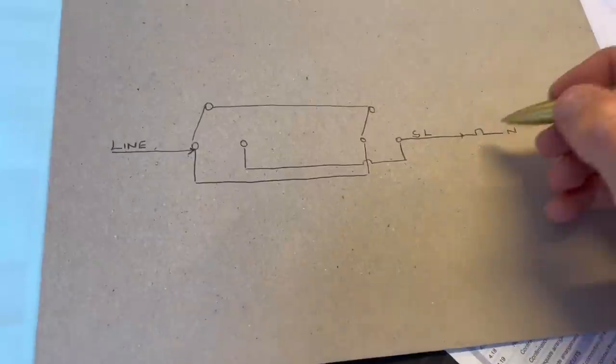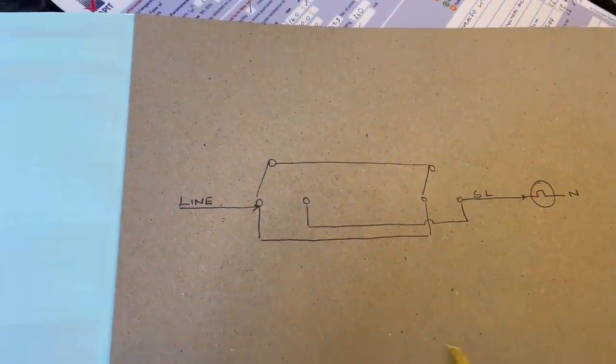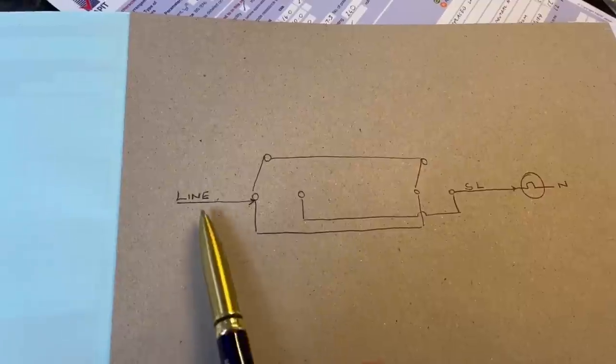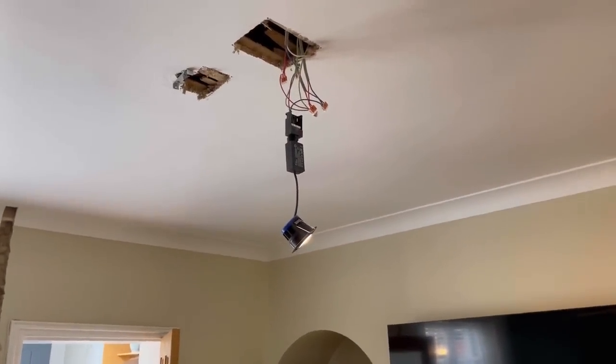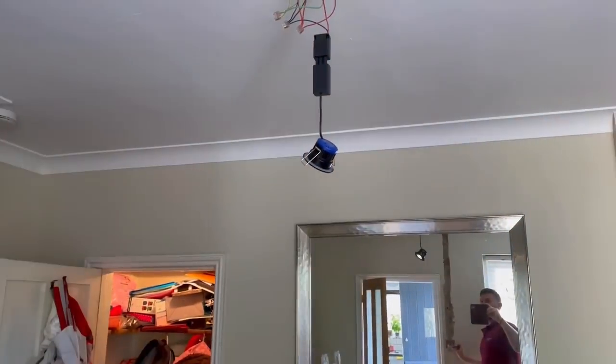So let's just see what's happening on this circuit. And so now if I operate this light switch, it comes on. I walk over to this one, it goes off.